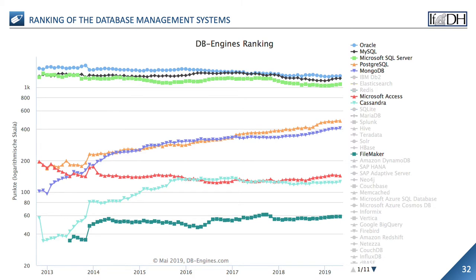The long-term trend also shows little change here. Please note the logarithmic scale — the gap to the top three is much larger. Because of their user-friendliness, I have added MS Access and FileMaker, which continue to be successful especially in the humanities.